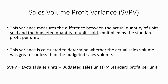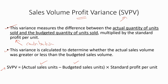Now let's discuss about the sales volume profit variance, denoted by SVPV. This variance measures the difference between the actual quantity of units sold and the budgeted quantity of units sold, multiplied by the standard profit per unit. If we are using the marginal costing technique, we use contribution instead of profit. It is calculated to determine whether actual sales volume was greater or less than budgeted. The formula is: SVPV = (Actual sales units − Budgeted sales units) × Standard profit per unit.